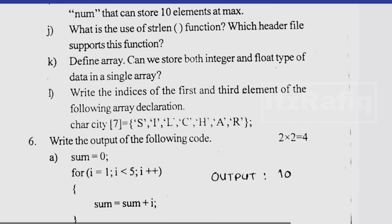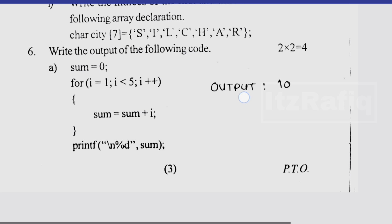Then number i, write the indices of the first and third element. The first one will be... write the indices of the first and the third element of the following array. Here not asking the element, asking indices, so answer will be the first one is zero and third one is two. Then number six output.